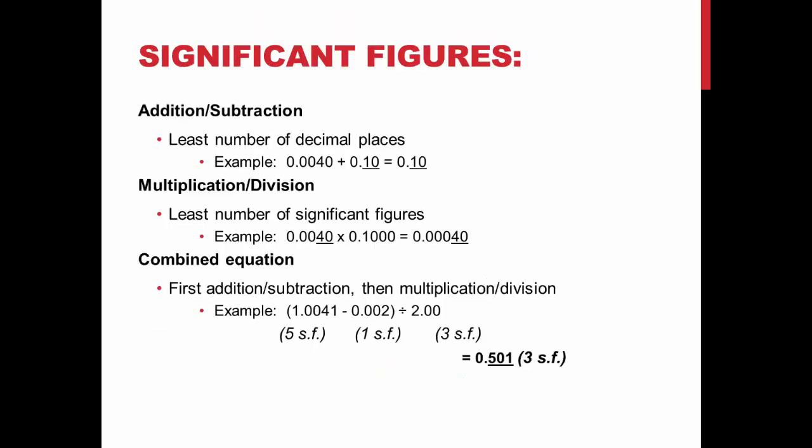Significant figures. When you add or subtract, your answer should be in the least number of decimal places. For example, the answer to 0.0040 plus 0.10 should be represented with two decimal places: 0.10. When you multiply or divide, your answer should be represented in the least number of significant figures. For example, the answer to 0.0040 times 0.1000 should be represented with two significant figures: 0.00040.